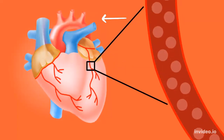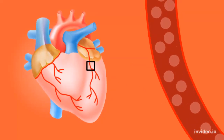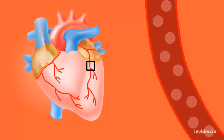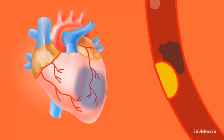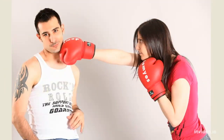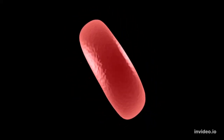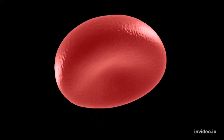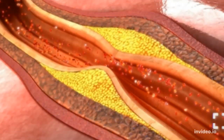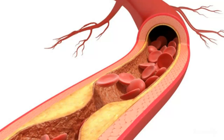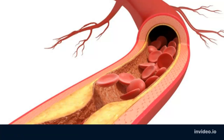These arteries and their branches supply all parts of the heart muscles with blood. Since coronary arteries deliver blood to the heart muscle, any coronary artery disorder or disease can have serious complications by reducing the flow of oxygen and nutrients to the heart muscle. This can lead to a heart attack and possibly death. Atherosclerosis — a buildup of plaque in the inner lining of an artery causing it to narrow or become blocked — is the most common cause of heart disease.